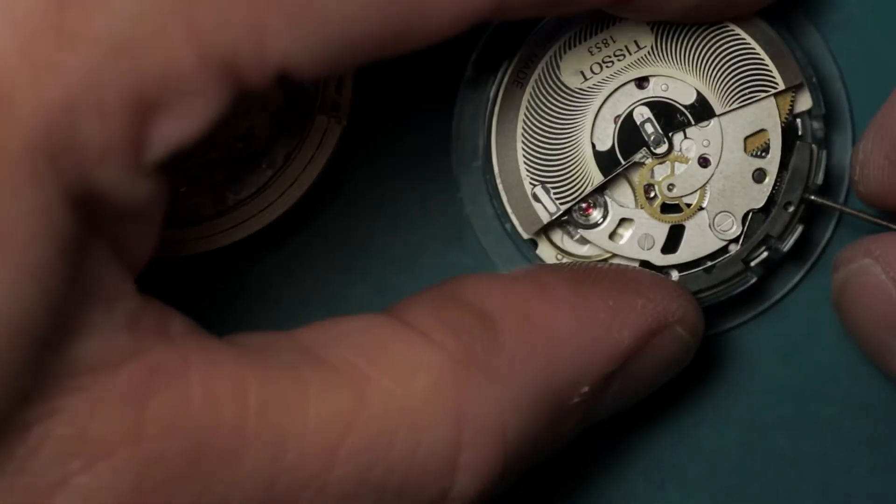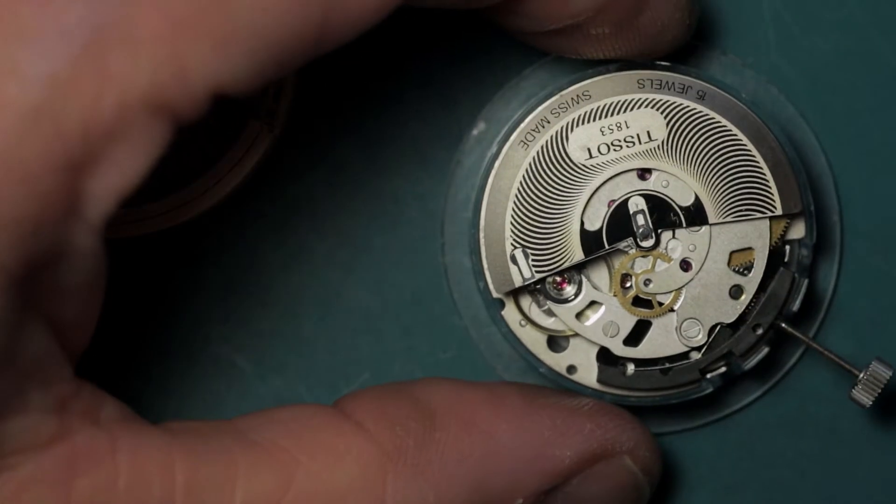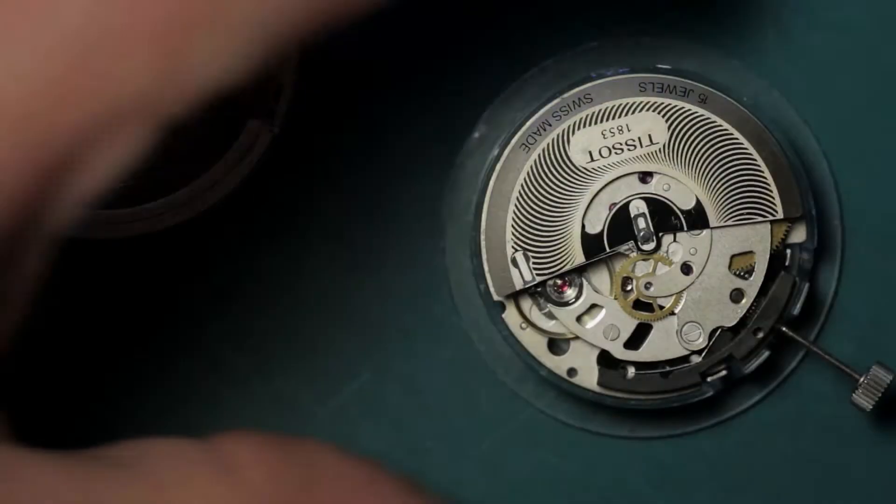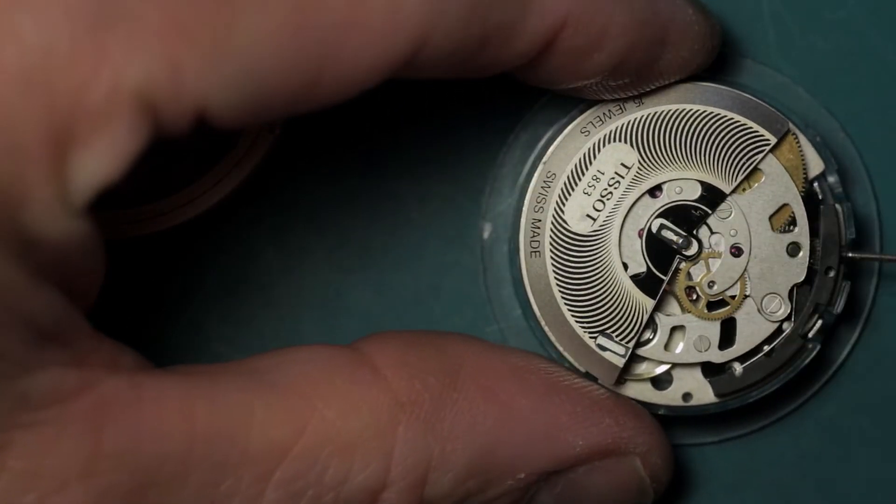And if we go to the back of the movement, I'm going to need to do a little bit of disassembly. You can see this is marked Tissot, because these are, I believe, unique to the Tissot movements.